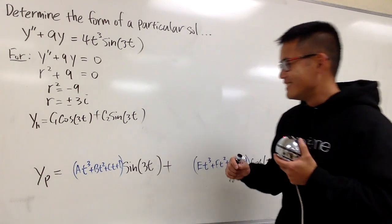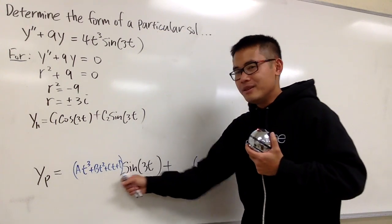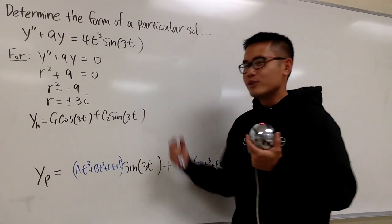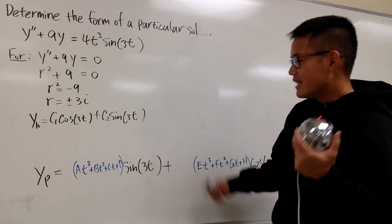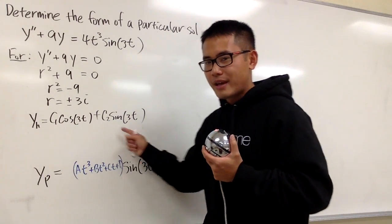Here's the trouble. Cosine 3t, sine 3t. Cosine 3t, sine 3t, right? So unfortunately, they match. But as I said, this is not bad. This is just an easy fix. As long as you remember to check that.